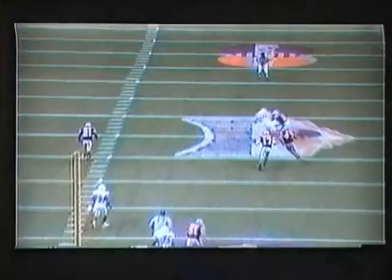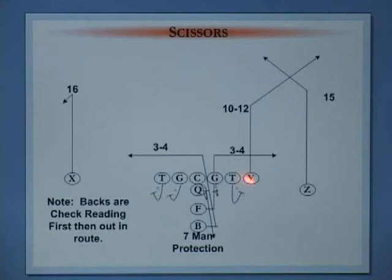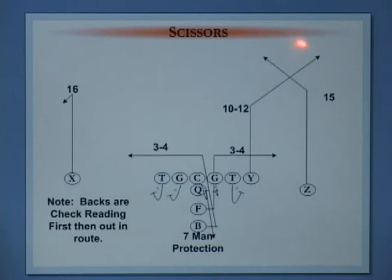Here we're going to talk about scissors — a great quarters beater or play-action versus man. We're using seven-man protection; backs are checking, releasing, and getting out. The Z has an 8 to 10 yard split, wants to push 15 yards, stick his foot in the ground, three steps, and eyes to the sky — landmark post looking for the near goal post. The inside receiver goes 10 to 12 yards, sticks his foot in the ground and goes to 26. Backside, we run a corner or comeback for come-open-late to keep the backside out of it. We check post to corner to flat, reading high to low.